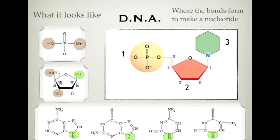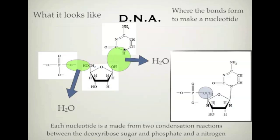Your phosphate group attaches where your oxygens are. Together, what happens is: our nitrogen base and the carbon 3 OH come together to form a link, and you get water coming out — a condensation reaction, so water is expelled. From your phosphate and your deoxyribose sugar, even though it says O-negative, you can think of this as an OH group on the phosphate. Another condensation reaction happens and water comes out. So each nucleotide is made from two condensation reactions between the deoxyribose sugar and phosphate, and between the deoxyribose sugar and the nitrogen base.